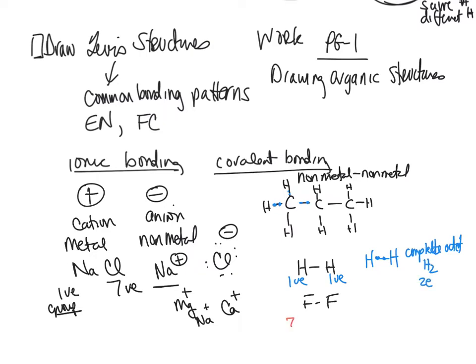Fluorine is in group seven, so it has seven valence electrons. The other fluorine also has seven. It needs eight valence electrons total, so it shares the bonding pair to complete its octet — and both fluorines end up with eight valence electrons each. The octet rule is followed, and this is a covalent bond.